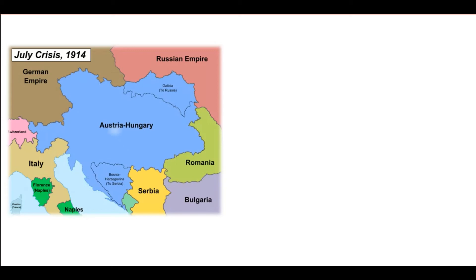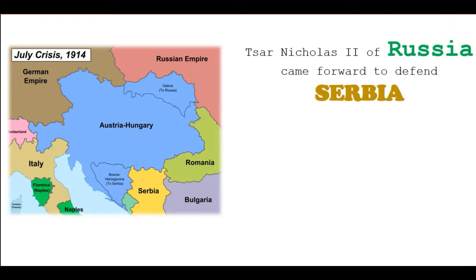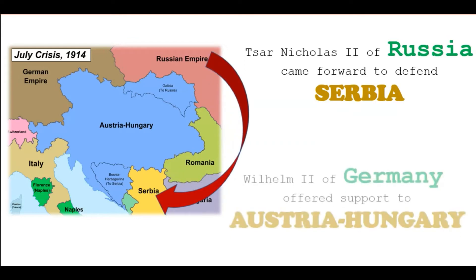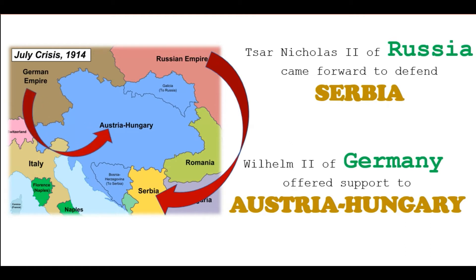At this time, the ruler of Russia, Tsar Nicholas II, came forward to defend and protect Serbia. On the other hand, Germany offered help to Austria-Hungary to showcase the strength of Germany to the world.